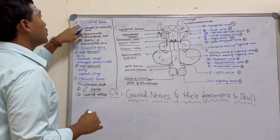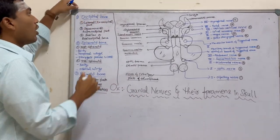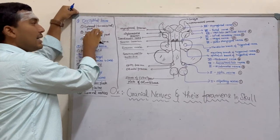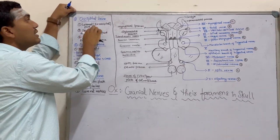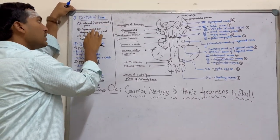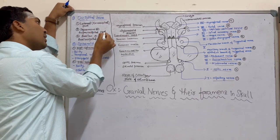The first bone is the occipital bone. The occipital bone consists of the lateral part, that is the exoccipital bone, and the squamous part, which is also called the supraoccipital bone.